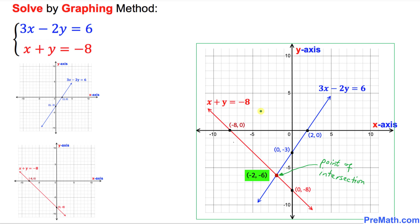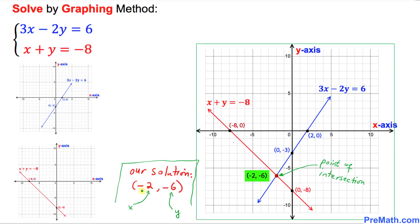Here is our final product. On the left-hand side you see the two individual graphs, and when we superimpose them — put them together — the point of intersection is (-2, -6). That is our solution. So x equals negative 2 and y equals negative 6.